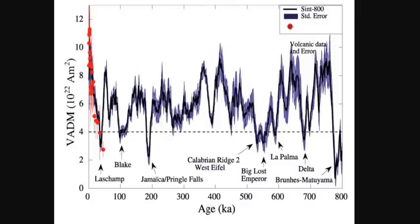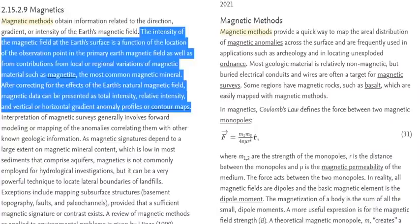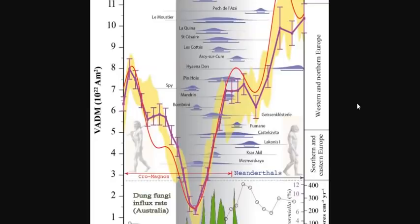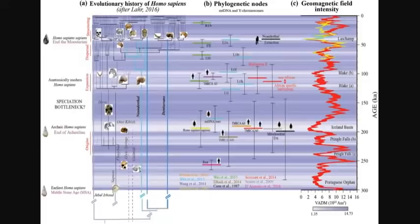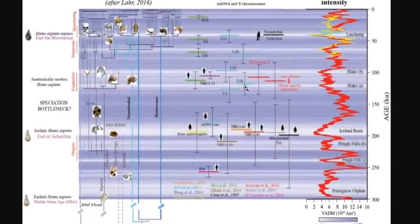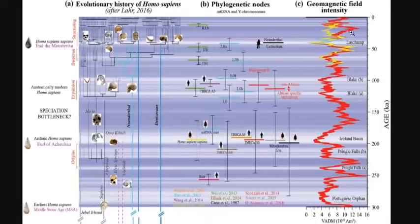This gives us a magnetic field intensity graph over time, and as more data comes in, the resolution gets higher and higher. Recent papers have achieved such high resolution that we can directly correlate dips in the magnetic field to mass extinctions in hominids like the Neanderthal and many other megafauna. These revelations have only come in the last few years, giving us direct links between geomagnetic field intensity and extinction events.